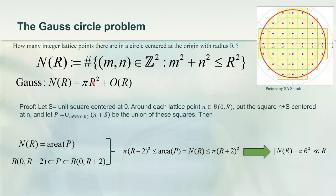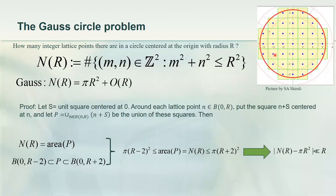I'm going to give you one proof because that proof is actually insightful — it will tell you what to expect and what not to expect. How do you prove that the number of lattice points is roughly the area with a remainder which is roughly the length of the perimeter? Around each lattice point, you put a unit square — you center a unit square at the lattice point. You get a bunch of unit squares which are disjoint except for the boundary. The area of this polygon is just the number of unit squares, because the area of each square is one.